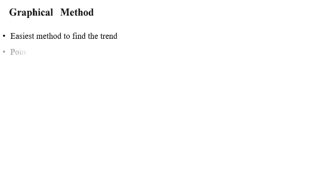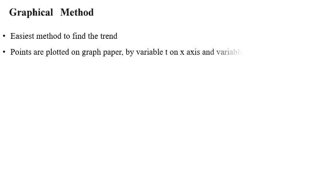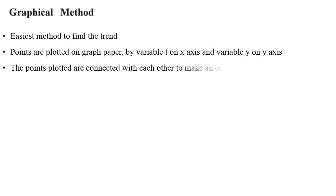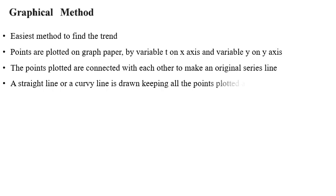The graphical method, similar to the scatter diagram method studied in correlation and regression, involves plotting all the points on graph paper. It is the easiest method to find the trend. The time variable t is taken on the x-axis and the y variable on the y-axis. The data points are plotted and connected with a line to form the original series. Then we draw a straight or curved line nearest to most of the points, based on an estimate.